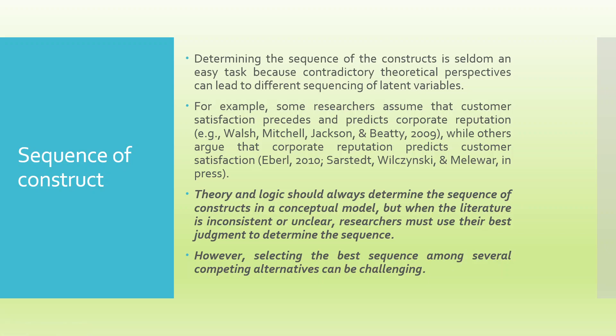The biggest herculean task of the researcher is to determine the sequence of the construct. For example, some researchers assume that customer satisfaction precedes and predicts corporate reputation, while others argue that corporate reputation predicts customer satisfaction. So theory and logic should always determine the sequence of constructing a conceptual model. But when literature is inconsistent or unclear, researchers must use their best judgment or you can go for expert's opinion to determine the sequence. However, selecting the best sequence among several competitive alternatives can be always challenging.